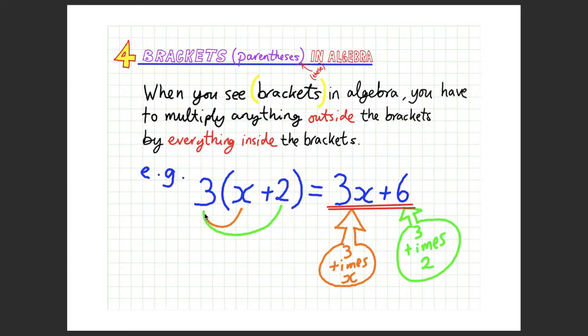So I've tried to color code this, so orange for 3 times x, 3 times x there, and green for 3 times 2, 3 times 2 there, making 6.